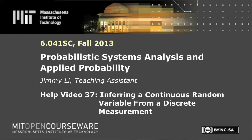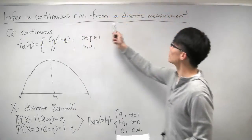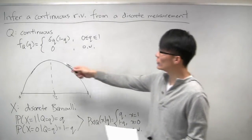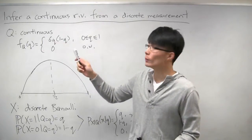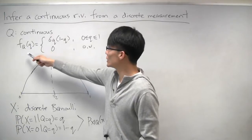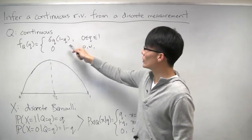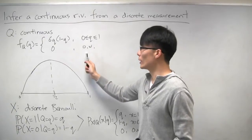In this problem, we're going to look at how to infer a continuous random variable from a discrete measurement. The continuous random variable that we're interested in is q, which is given by this PDF.